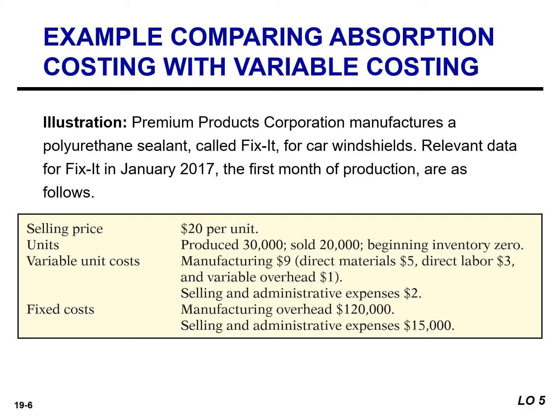We have a selling price of $20. We produced 30,000 units and sold 20,000 units. Our beginning inventory is zero. Our variable costs: manufacturing is $9, selling and administrative is $2. Our fixed costs: manufacturing overhead of $120,000 and selling and administrative expenses of $15,000.